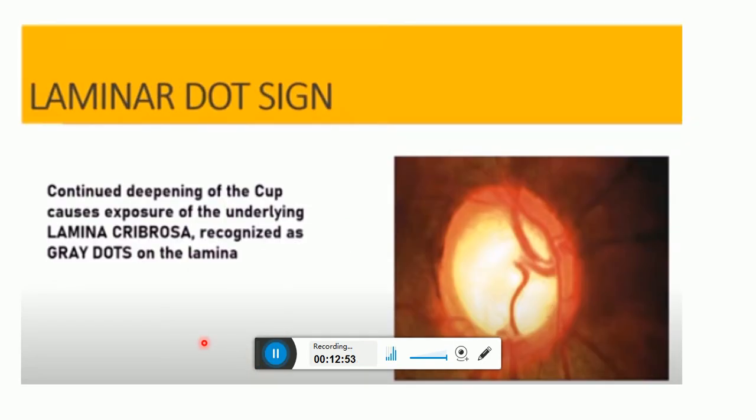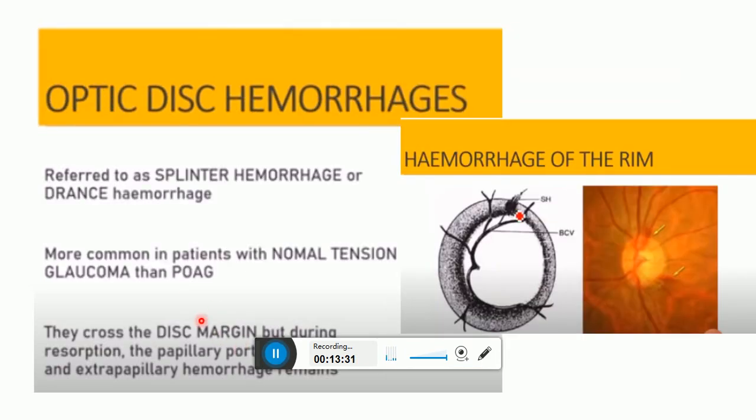The laminar dot sign occurs in advancing glaucoma. Gray dot-like fenestrations in the lamina cribrosa become exposed as the neuroretinal rim recedes. The fenestrations sometimes appear linear, and this itself may be a sign of advanced damage indicating distortion of the lamina. The dots may be seen in normal eyes. There is continued deepening of the cup causing exposure of the underlying lamina cribrosa, recognized as gray dots on the lamina. Optic disc hemorrhage is a risk factor for the development and progression of glaucoma and can be missed unless magnification is used to examine the disc.